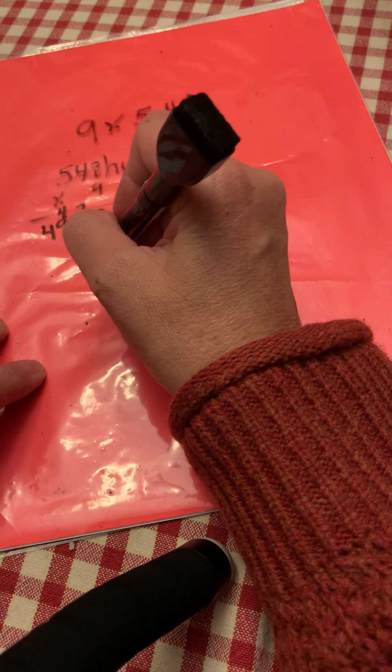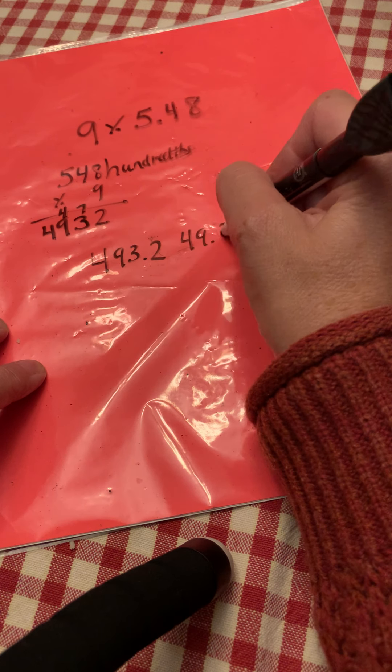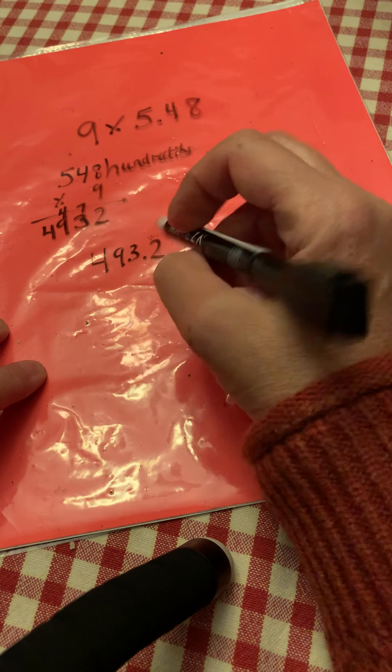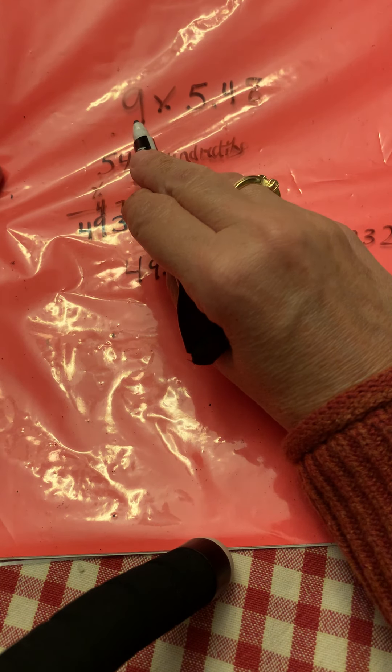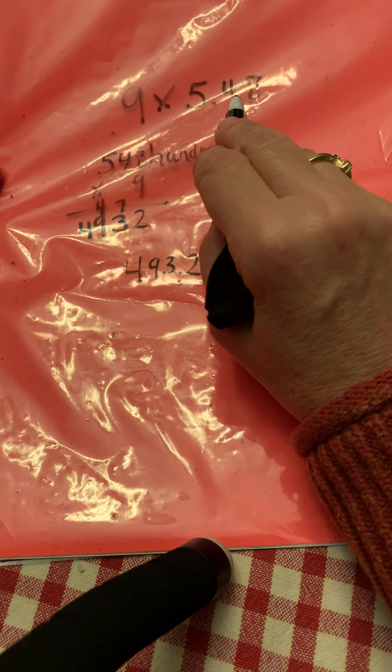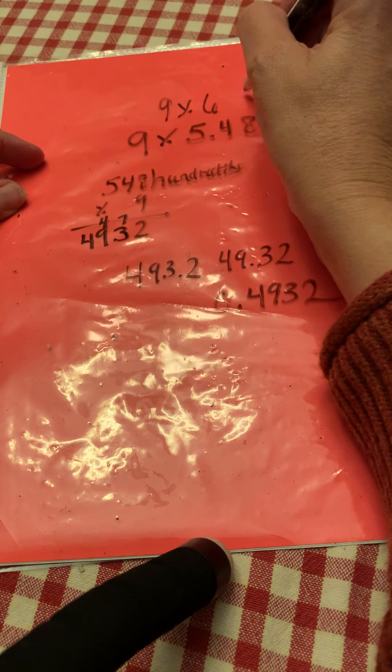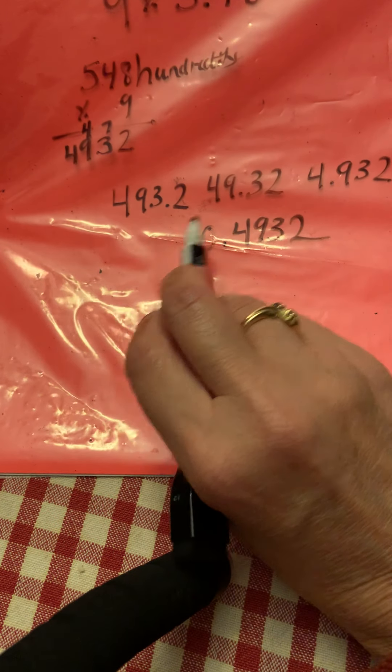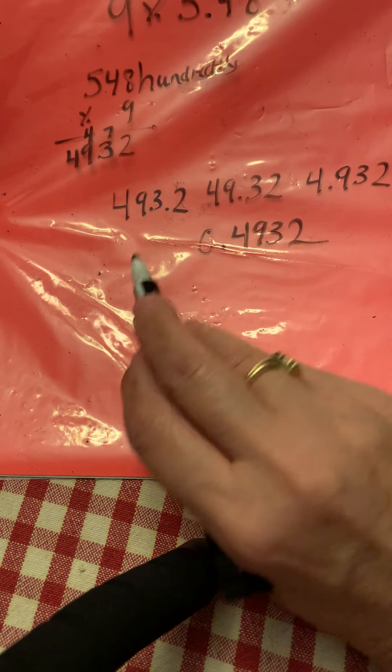Those are the digits. Your choices were 493.2 tenths, 49.32 hundredths, 4.932 thousandths, or .4932. Next step, do some estimation. Nine times 5.48 hundredths. Well, if I rounded 5.48 hundredths to the nearest whole number, I would say nine times six is 54. At this point, you might have enough information to pick one of these, but these really aren't that close to 54, are they? I still think I know which one it is.